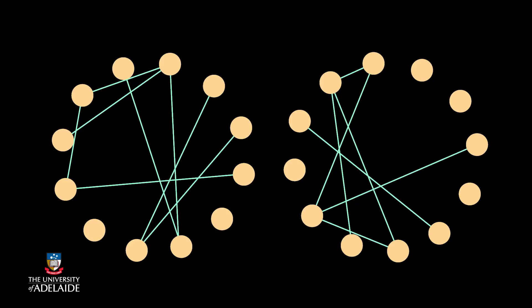The random networks generated with the same set of parameters n and p look slightly different to each other. Although the real networks are not Poisson, the random networks provide us a useful model to do some initial analysis.